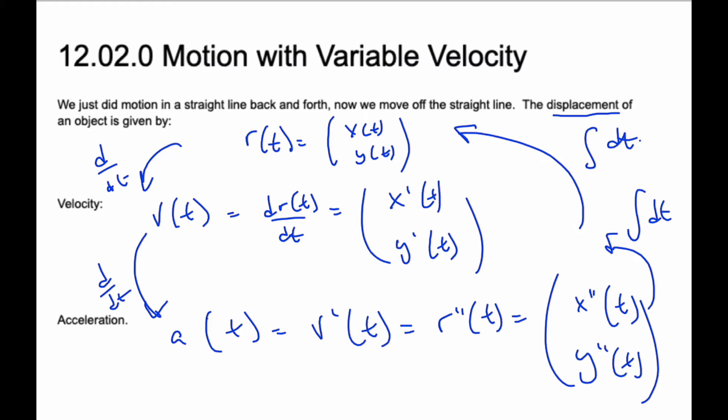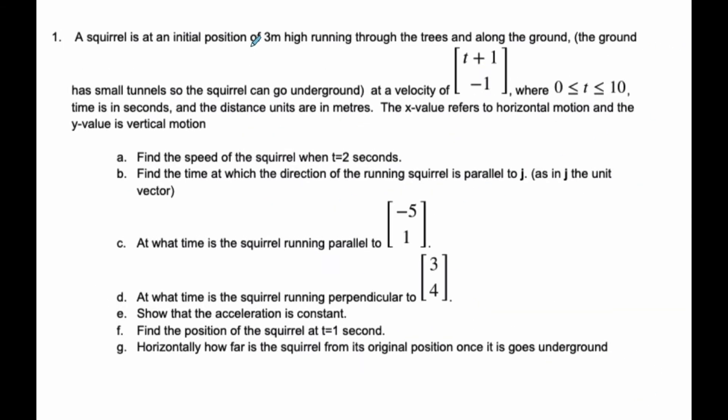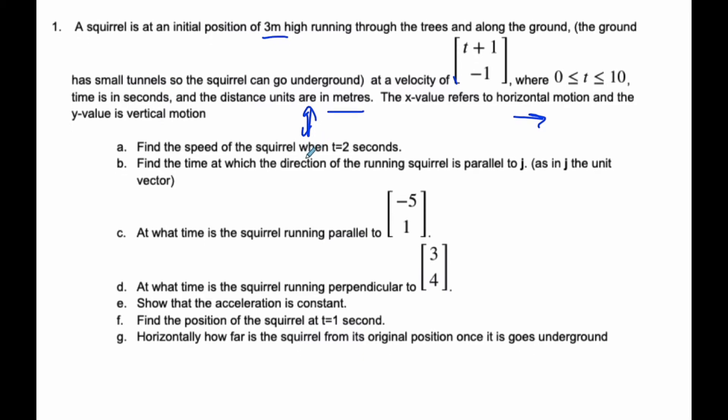Let's try an actual example. Let's consider this. So a squirrel is at an initial position, 3 meters high, running through the trees along the ground. The ground has small tunnels in it, so the squirrel can go underground. The velocity is expressed by this particular vector here, for t being 0 to 10. And we have time in seconds and distance are in meters. X is the horizontal motion, and the y is the vertical motion.